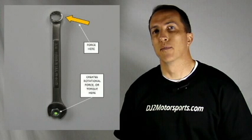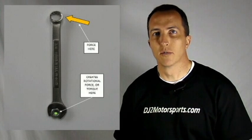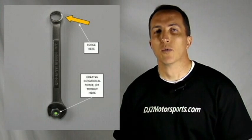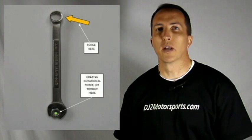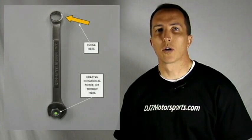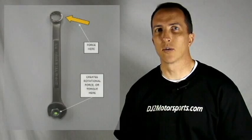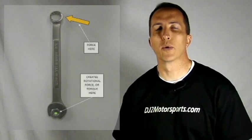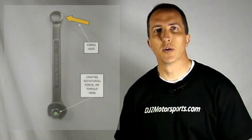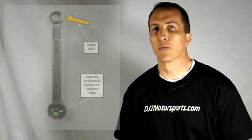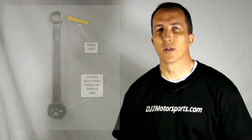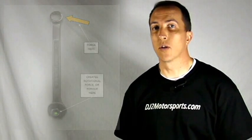Now if we're having a hard time loosening that bolt, what we do is we get a longer wrench, or put a handle on the wrench, or we end up putting a piece of pipe over the end of the wrench to create a longer handle.